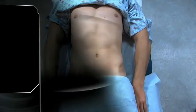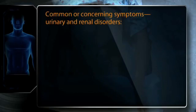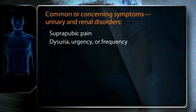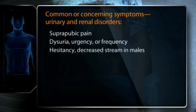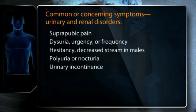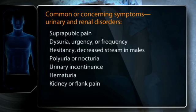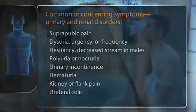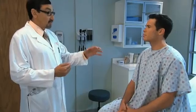Common or concerning symptoms relating to the abdomen and specific to urinary and renal disorders include suprapubic pain, dysuria, urgency or frequency, hesitancy, decreased stream in males, polyuria or nocturia, urinary incontinence, hematuria, kidney or flank pain, and ureteral colic. Eliciting the patient's concerns before the examination makes your examination more efficient and more reassuring to the patient.